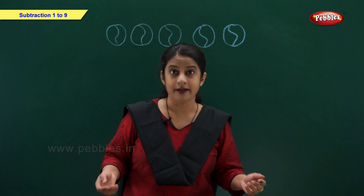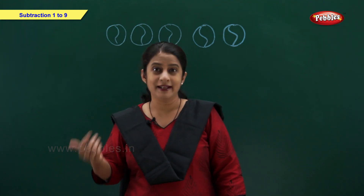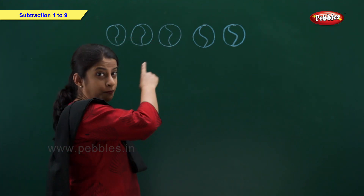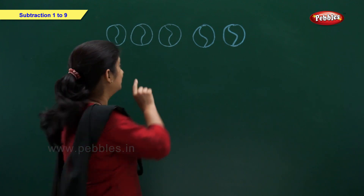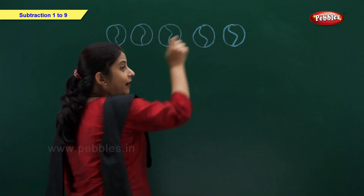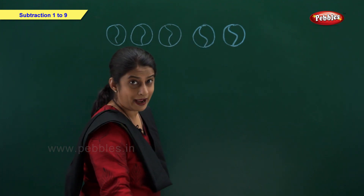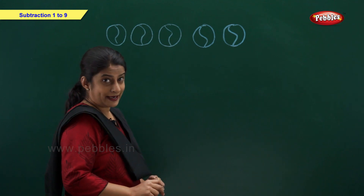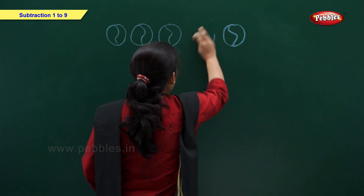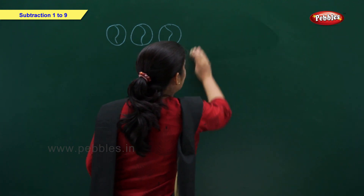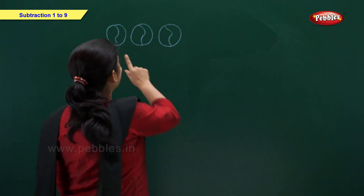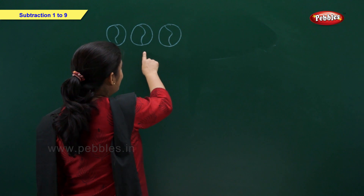Take away. Friends, now let us see an example. I have 1, 2, 3, 4, 5 — 5 balls. I gave 2 balls to my younger brother: 1 and 2. So how many balls left with me? Let's count: 1, 2, 3.